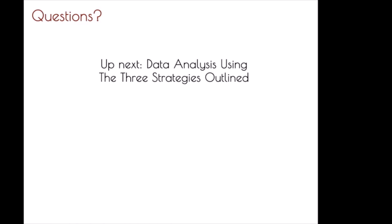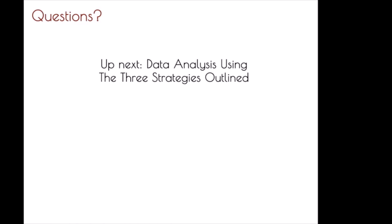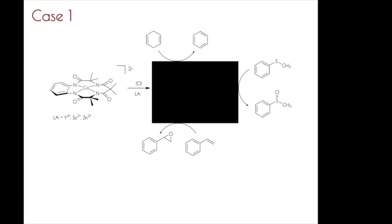I've taken three different cases to highlight strategy one, strategy two, and a pseudo strategy three. In one case, we were examining intermediates formed in cobalt-based oxidation reactions. You start with a formally cobalt-2 species, oxidize it in the presence of a Lewis acid, and form some intermediate that facilitates oxidation reactions. I have this as a black box not to hide the structure, but because the chemistry is really much more black-box than my collaborators and I would like to admit, with a huge number of unknowns.